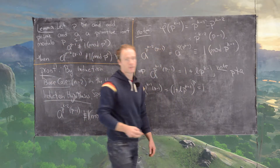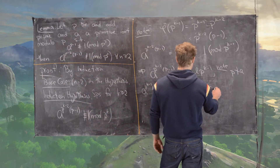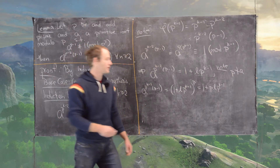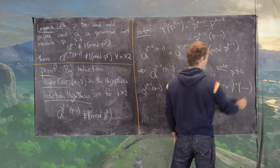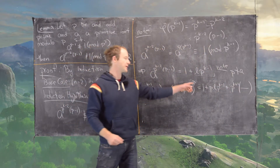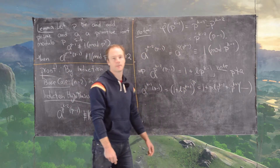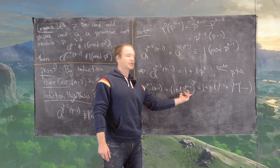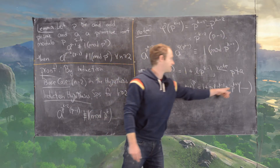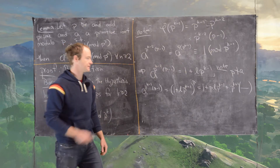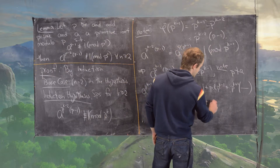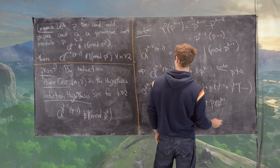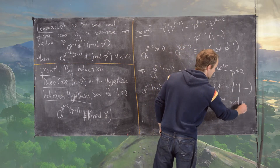That is equal to 1 plus p times l times p to the k minus 1, plus p to the k plus 1 times all of the rest. If we raise this to the pth power with the binomial expansion theorem, we get 1 to the p and then 1 to the p minus 1 times this to the first power. Every other term will have this factor squared and higher, and you can factor a p to the k plus 1 out of all of those, which tells us that all of this is congruent to 1 plus p times l times p to the k minus 1, modulo p to the k plus 1.